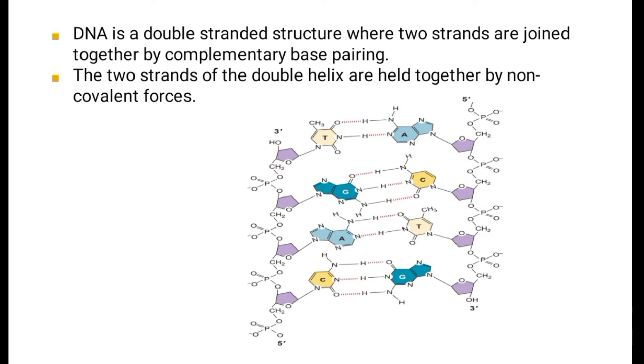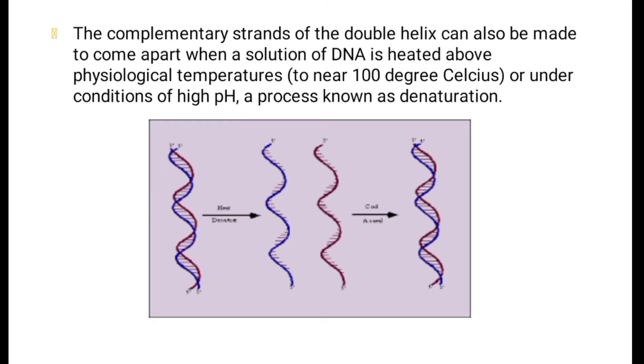DNA is a double-stranded structure where two strands are joined together by complementary base pairing. The two strands of the double helix are held together by non-covalent forces. The complementary strands of the double helix can also be made to come apart when a solution of DNA is heated above physiological temperatures to near 100 degrees Celsius or under conditions of high pH, a process known as denaturation.